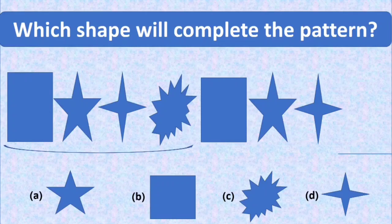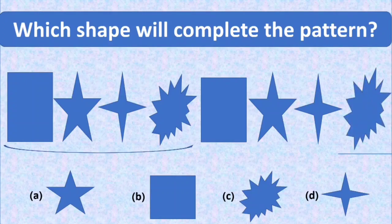First shape is a rectangle. Second is a five-sided star. Third is a four-sided star. And fourth shape has many sides. We will fill the blank with the shape having many sides. It is at option C, and the pattern is complete now. So option C is the correct option.